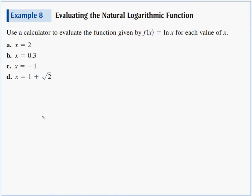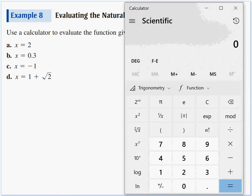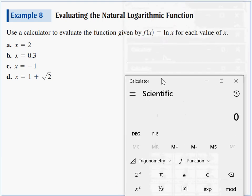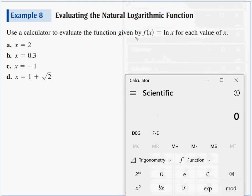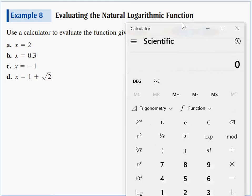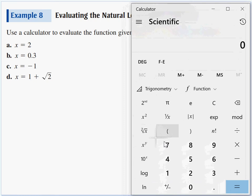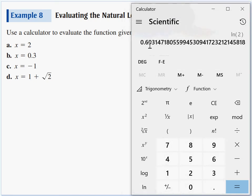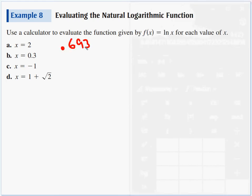Alright, we're gonna do a little calculator work here on my laptop calculator. Here's our log key, the common log. Here is the special key, the ln or the nat log key. So what we're going to do, use a calculator to evaluate the function given by f(x) = ln x for each value of x. So we want 2, and we're going to nat log it. And we get that decimal 0.6931.